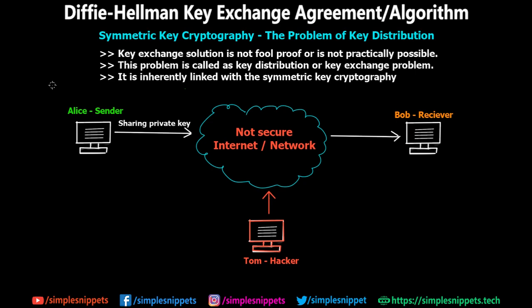One major question that arises in symmetric key cryptography is: how do we communicate the key that is going to be used in encryption and decryption? As you can see in the diagram, let's say Alice stays in the US and Bob stays in India. They want to perform communication and they know the network is not secure, so they want to use symmetric key cryptography. In that case they have to have a shared private key.